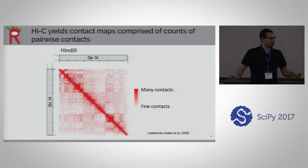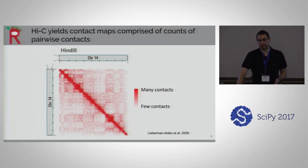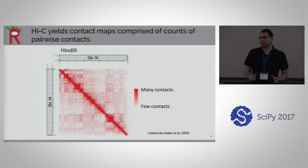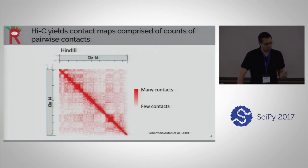After doing this and getting a whole bunch of sequencing done, you end up with a contact map. Each pixel doesn't correspond to one nucleotide — that would be far too fine-grained. In this picture, each pixel corresponds to 100 KB, representing how many times one 100 KB fragment is in contact with another 100 KB fragment.